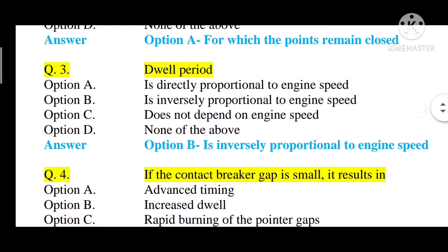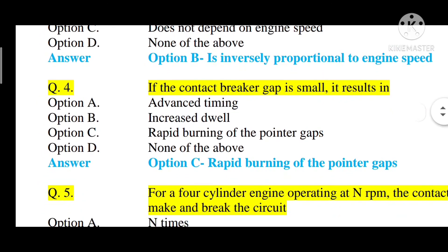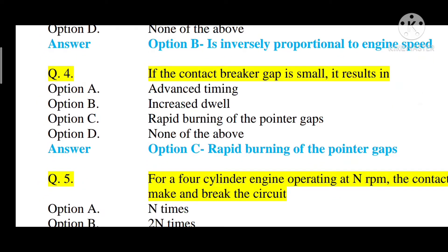Question number four: if the contact breaker gap is small, it results in — option A: advanced timing, option B: increased dwell, option C: rapid burning of the pointer gaps, option D: none of the above. The correct answer is option C — rapid burning of the pointer gaps. If the contact breaker gap is small, it results in rapid burning of the pointer gaps.